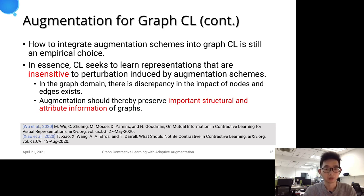In essence, contrastive learning seeks to learn representations that are insensitive to perturbation induced by data augmentation. The transformations therefore aim to produce a view which is distinct from the input, but is also imperceptible.